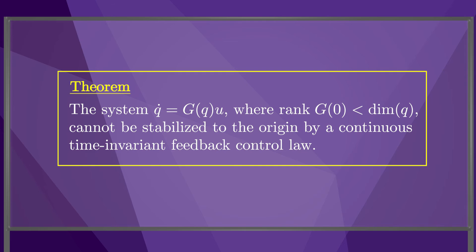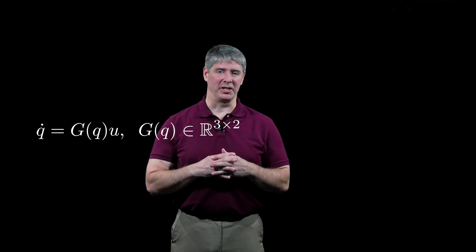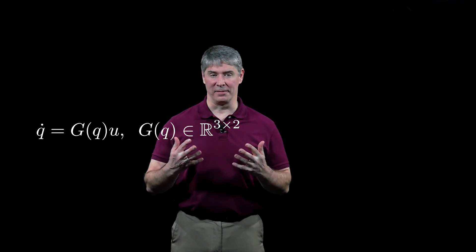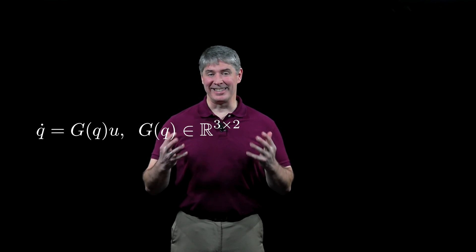For the canonical non-holonomic mobile robot, the rank of G is always two, which is less than three, the dimension of Q. So not only is there no control law that is linear in Q that can stabilize a desired configuration, there isn't even a stabilizing control law that's continuous in Q.